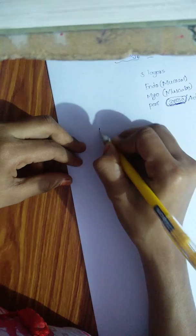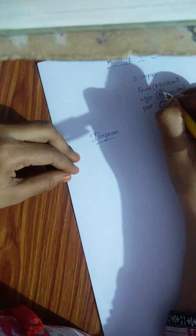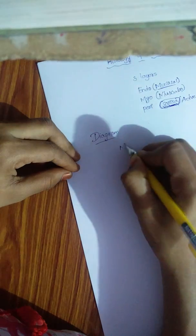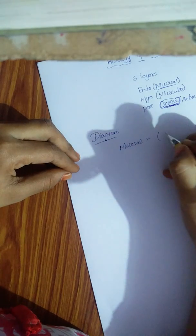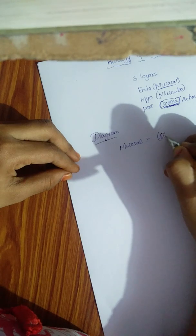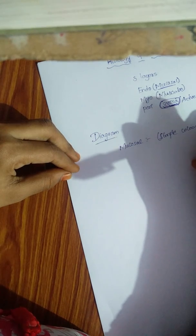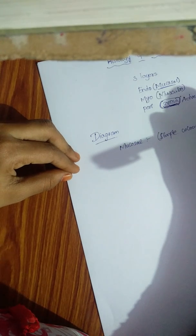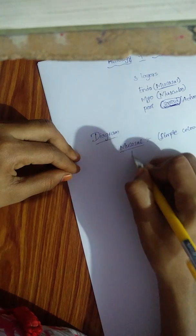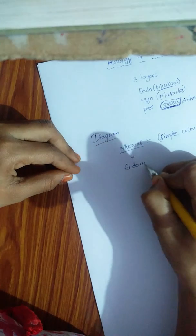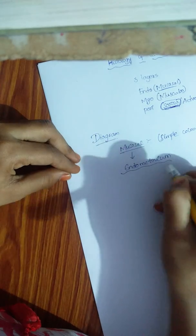The endometrium is the mucosal layer. The lining epithelium of the mucosal layer is simple columnar epithelium. The mucosal layer is also called the endometrium, and the endometrium itself has three layers.